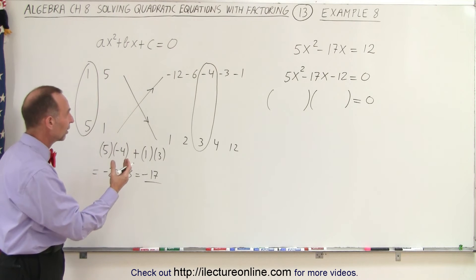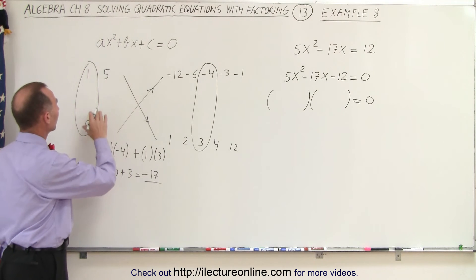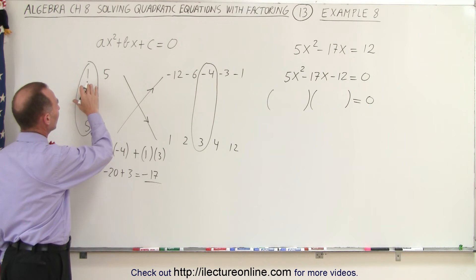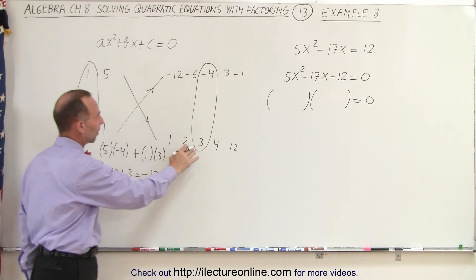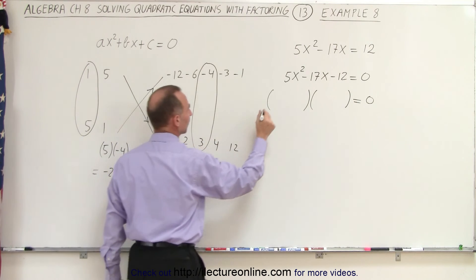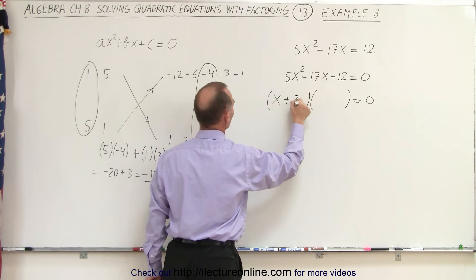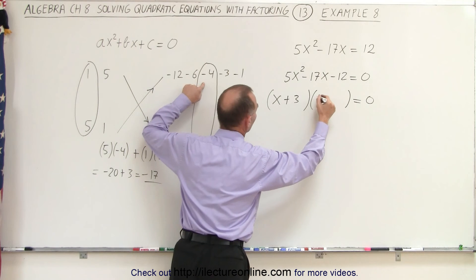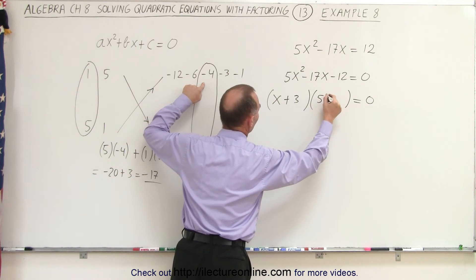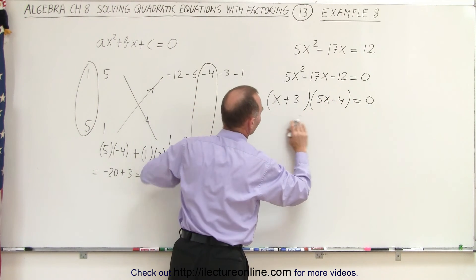So we can factor that trinomial. We have x times positive 3, giving us x plus 3, and 5x times negative 4, or 5x minus 4.